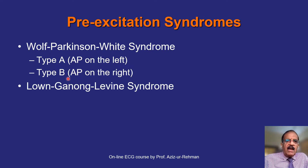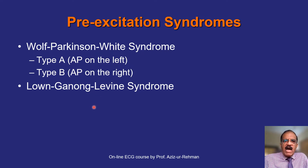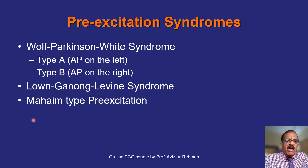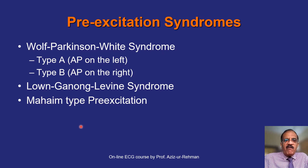The second type is Lown-Ganong-Levine syndrome, described by three scientists. In this condition the pathway is within the AV node, providing a shortcut to the ventricles, and the ECG abnormality is simply a short PR interval. The third is Mahaim type pre-excitation, the least common, where there is an anomalous pathway from the AV node down into the ventricles.